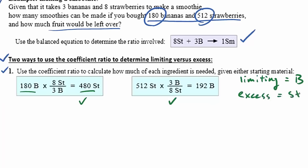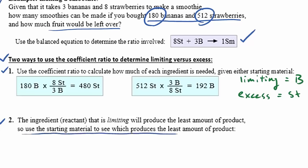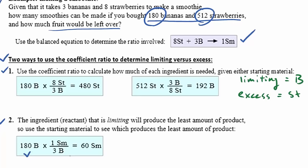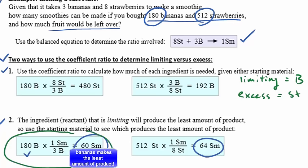You don't have to do both calculations — you only need to do one or the other. A second way of determining limiting versus excess is that the ingredient that is limiting will produce the least amount of product. Given 180 bananas and the coefficient ratio of one smoothie per three bananas, we get 60 smoothies. Using the other starting material — 512 strawberries times one smoothie per eight strawberries — gives 64 smoothies. Bananas make the least amount of product, so we get the same answer as before: the one that gives the least amount of product is the limiting reactant.